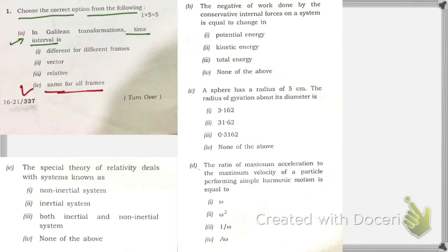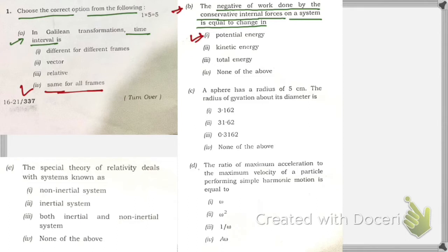Moving on to question B: the negative of the work done by the conservative internal force on a system is equal to what? The options are potential energy, kinetic energy, total energy, or none. The correct answer is the change in potential energy.